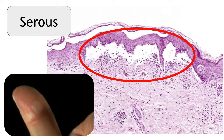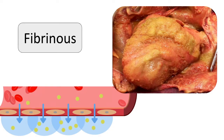In body cavities, the fluid may be derived from plasma as a result of the increased vascular permeability, or from the secretions of mesothelial cells as a result of local irritation. Accumulation of fluid in these cavities is called an effusion, and you can commonly see this on the external surface of your body in the form of a blister.